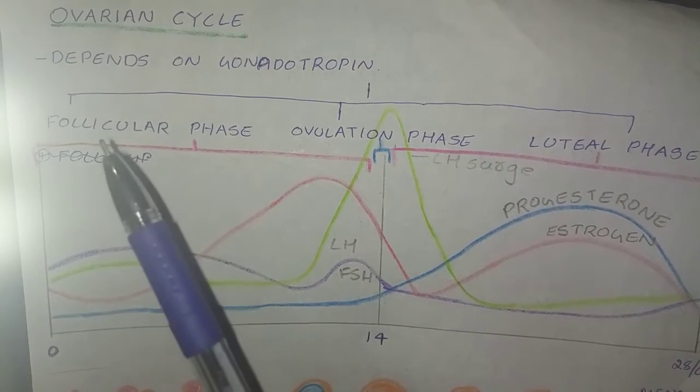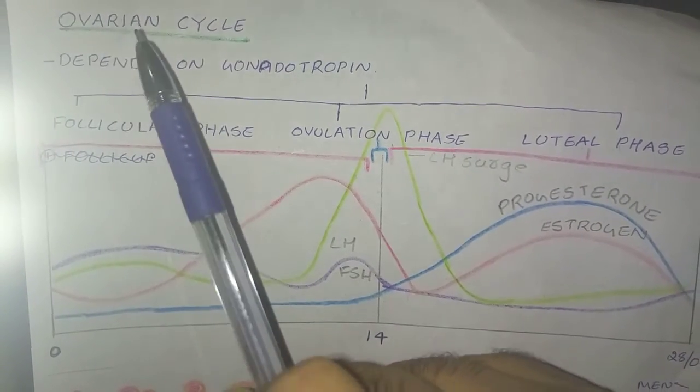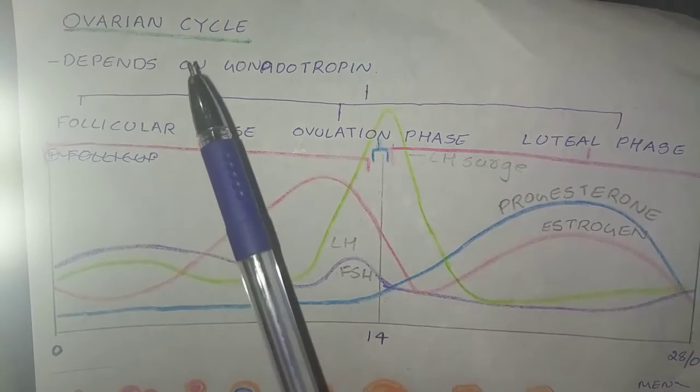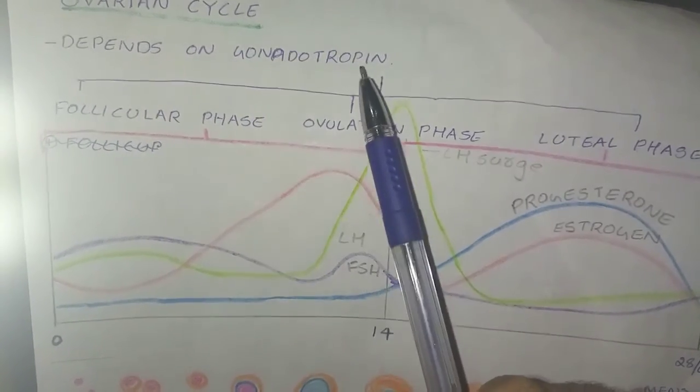Welcome to my YouTube channel. In this video we will be talking on the topic ovarian cycle. When we are discussing an ovarian cycle, it depends mainly on the hormone gonadotropin which is secreted by the anterior pituitary gland.